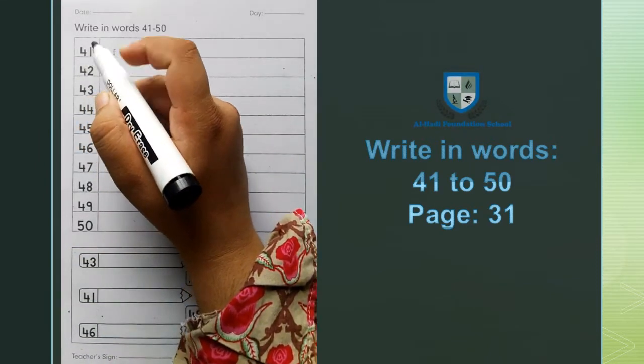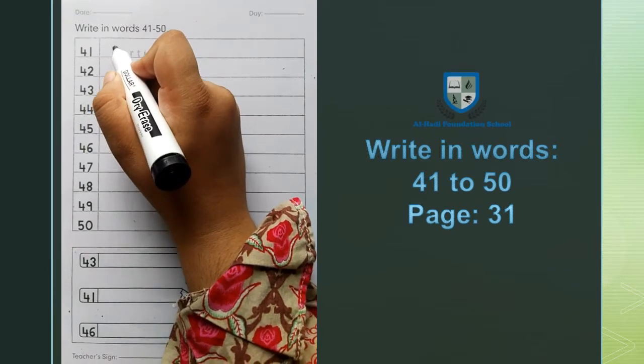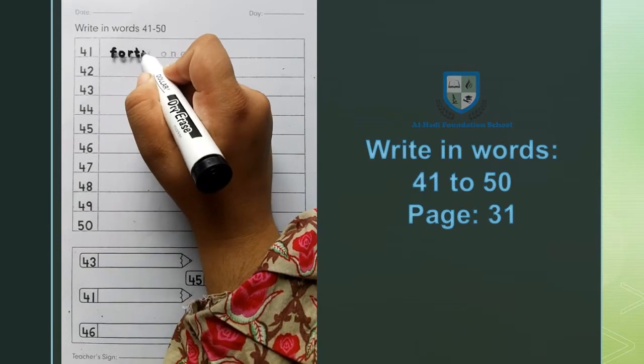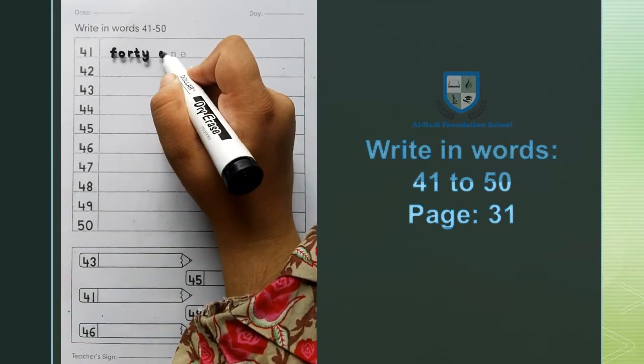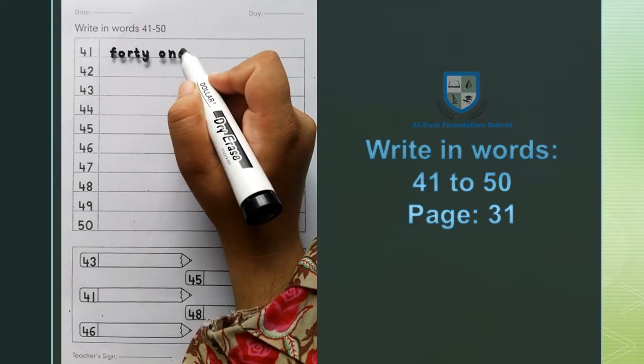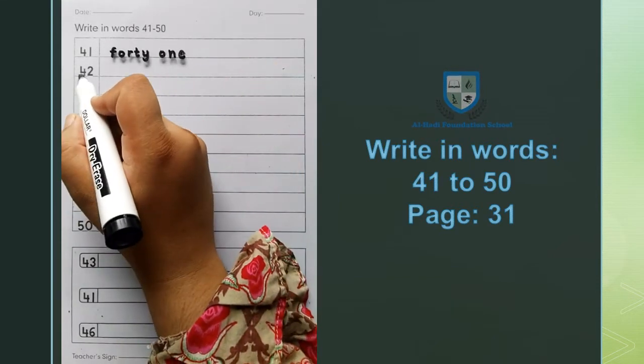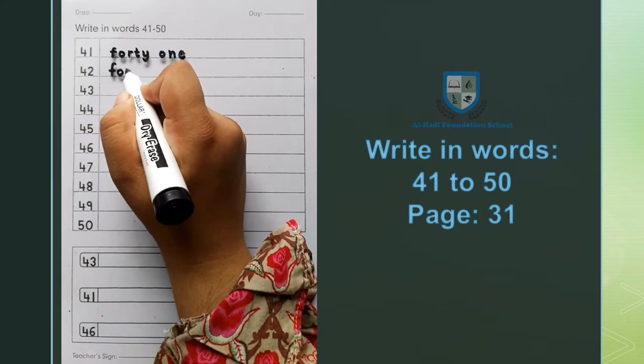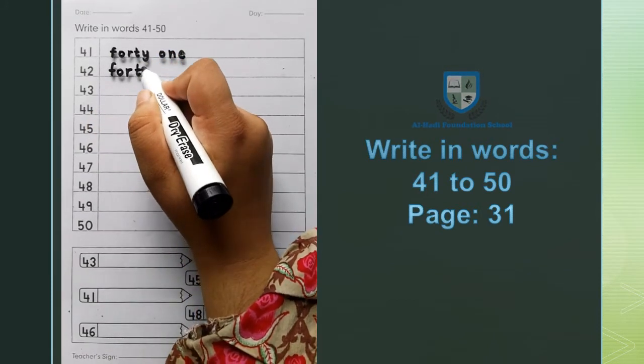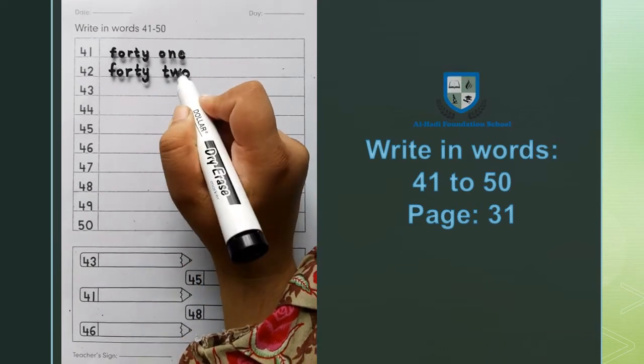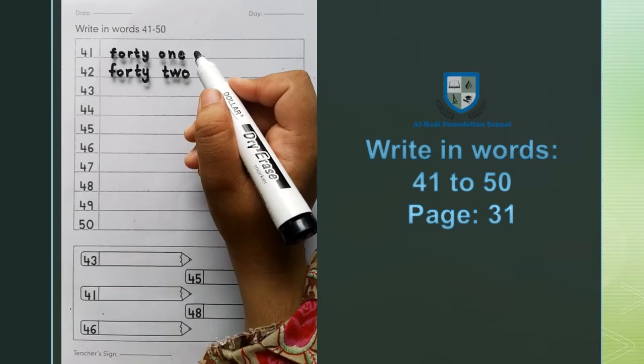41: F O R T Y, forty, O N E, one, forty one. Next number is 42: F O R T Y, forty, T W O, two, forty two. Next 43.